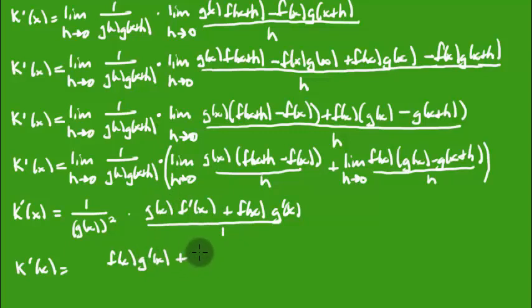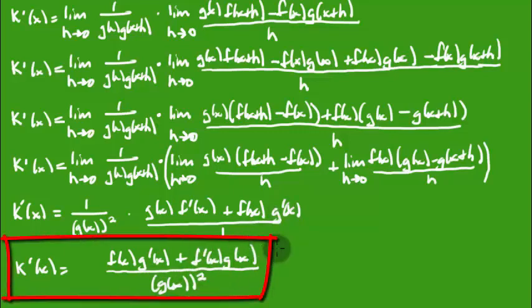And then this term goes next, which would be f prime of x times g of x. And I'm going to put this times one, so this is all going to go in the denominator, which is just g of x squared. And there you go. We now have the quotient rule.